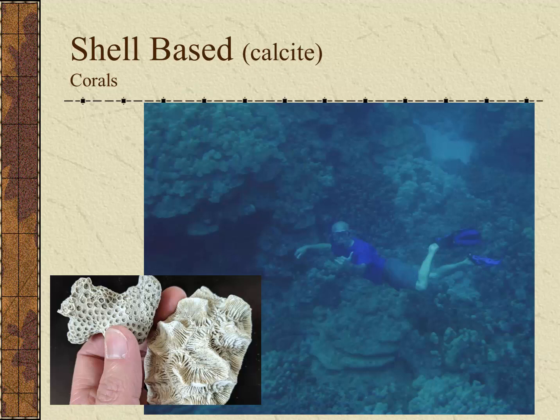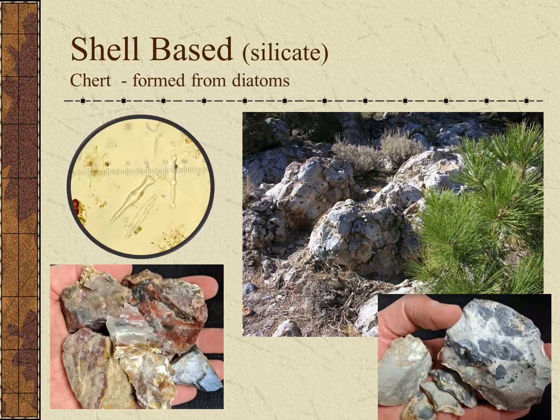Corals are another shell-based or calcium-based organic sedimentary rock. In the larger picture, we can see living corals in the waters just off the large island of Hawaii. The hand sample shows examples of dead coral, which is just the calcium carbonate remains of the living animal. The final type of shell-based organic sedimentary rock is composed of silicates rather than calcium carbonate. The sedimentary rock chert is formed from diatoms — as seen in the microscope image, diatoms may fall to the ocean or lake floor and compact and cement together to form chert.